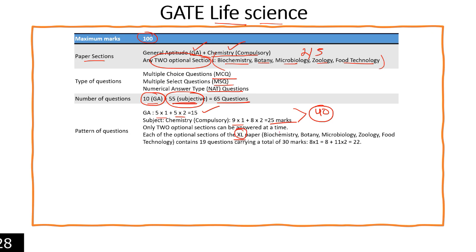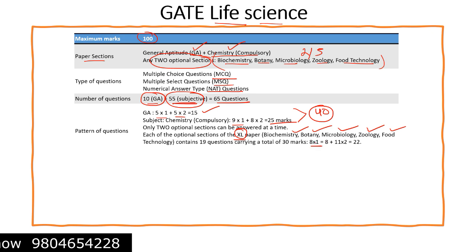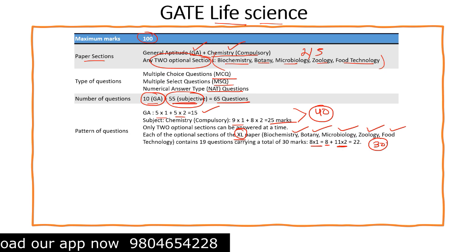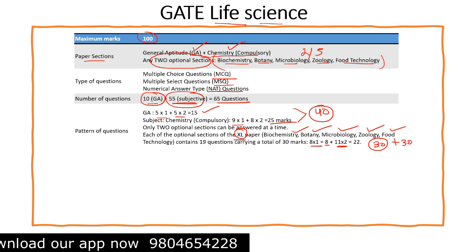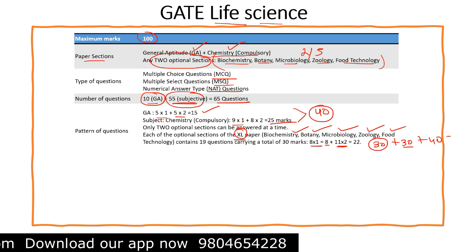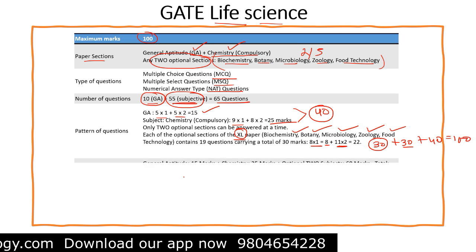The remaining 60 marks come from the two optional subjective papers, chosen from biochemistry, botany, microbiology, zoology, or food technology. Each optional paper has 19 questions total: eight questions of one mark each (8 marks) and eleven questions of two marks each (22 marks), giving 30 marks per optional paper — 30 plus 30 equals 60 marks.